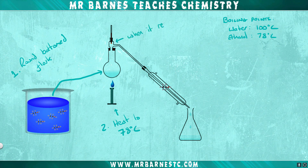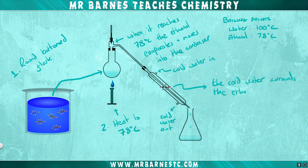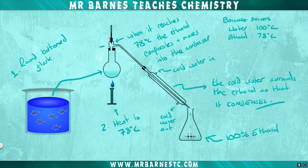When the top of the column reaches 78 degrees, the ethanol will have evaporated and can move into the condenser. The condenser is surrounded by cold water which cools the ethanol down so that it condenses, or turns back into a liquid. This allows you to get up to 100% ethanol, provided you keep below 100 degrees C so the water does not move into the condenser.